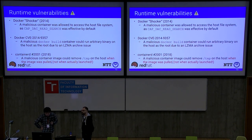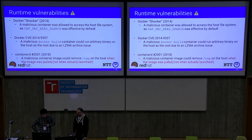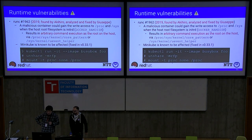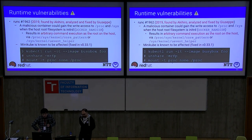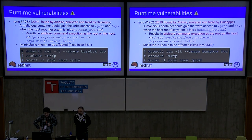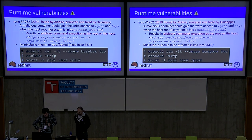Last year there was an issue in containerd where a malicious container image could remove /tmp on the host when the image was pulled from the registry — not when the container was created, but at pull time. Just a couple of weeks ago we fixed a serious issue related to minikube: a malicious container could gain write access to /proc and /sys when the host root filesystem is in initrd, potentially leading to arbitrary command execution as root on the host via /proc/sys/kernel/core_pattern or /sys/kernel/uevent_helper.